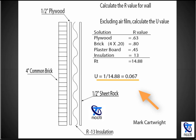Now to find the U value, we'll use the reciprocal of R. So we put 1 over 14.88, which equals 0.067. That is our U value. I appreciate you watching this tutorial, and good luck on the exam.